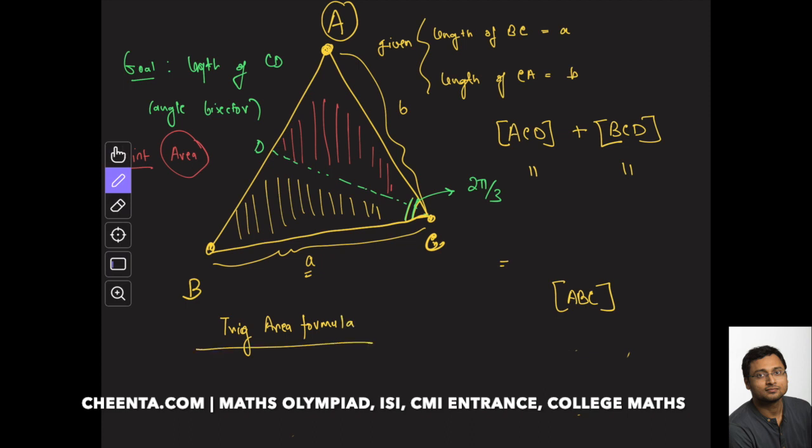What is that? It's half times product of sides times the sine of the angle between them. If you do not know how this formula works, you should definitely check out our trigonometry module.